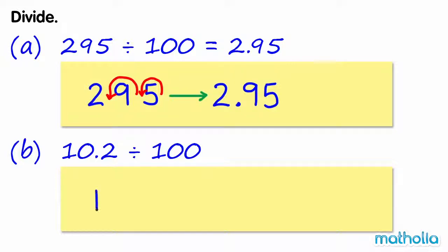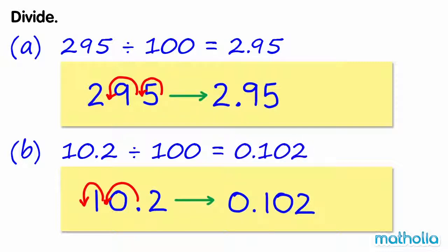B. 10.2 divide 100. Shifting the decimal point two places to the left gives 0.102. So 10.2 divide 100 equals 0.102.